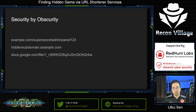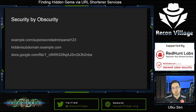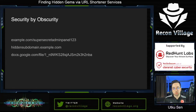Let's start with a highly debated topic: security by obscurity. Usually people argue against security by obscurity since it doesn't provide actual security — it relies on hiding information from an attacker. If the attacker somehow finds the information, it's game over. However, in some cases, security by obscurity can be useful, and sometimes you have no other option but to trust the obscurity.